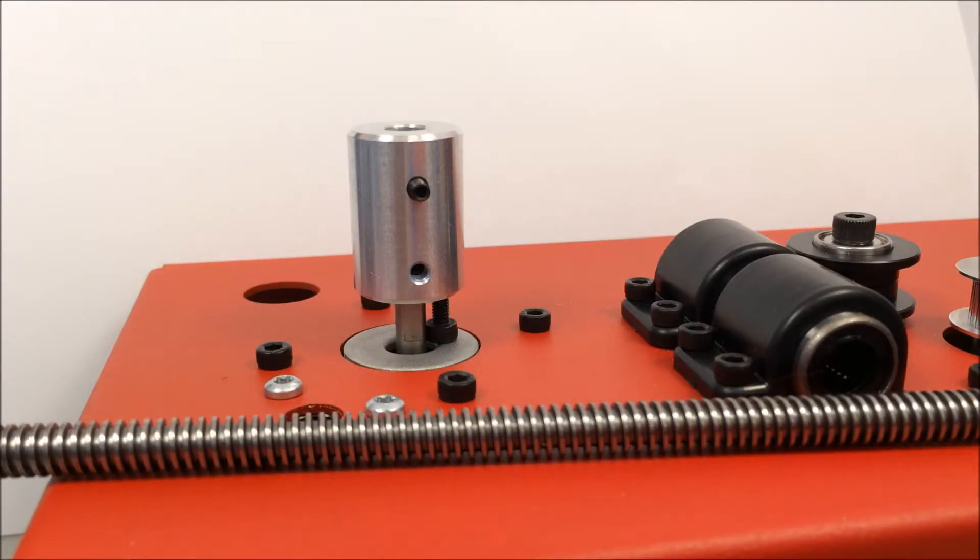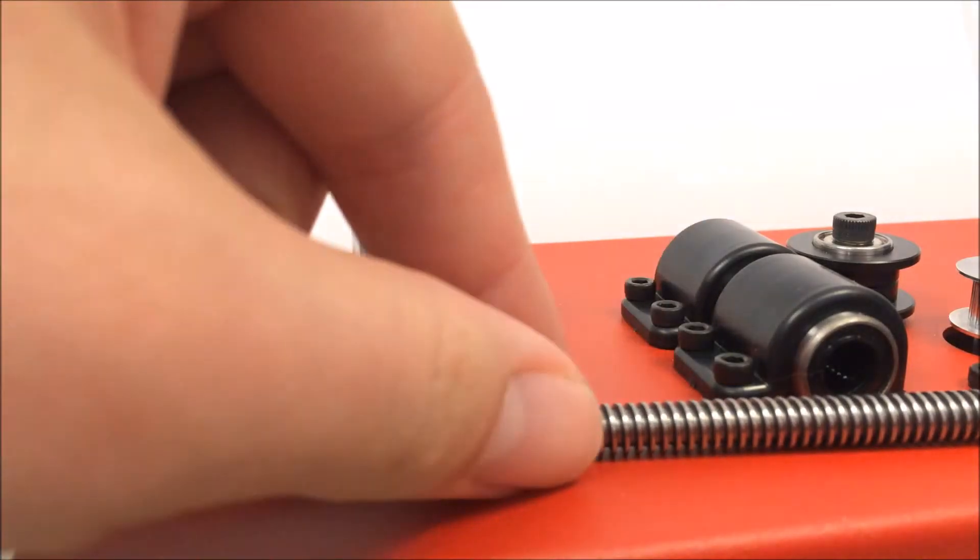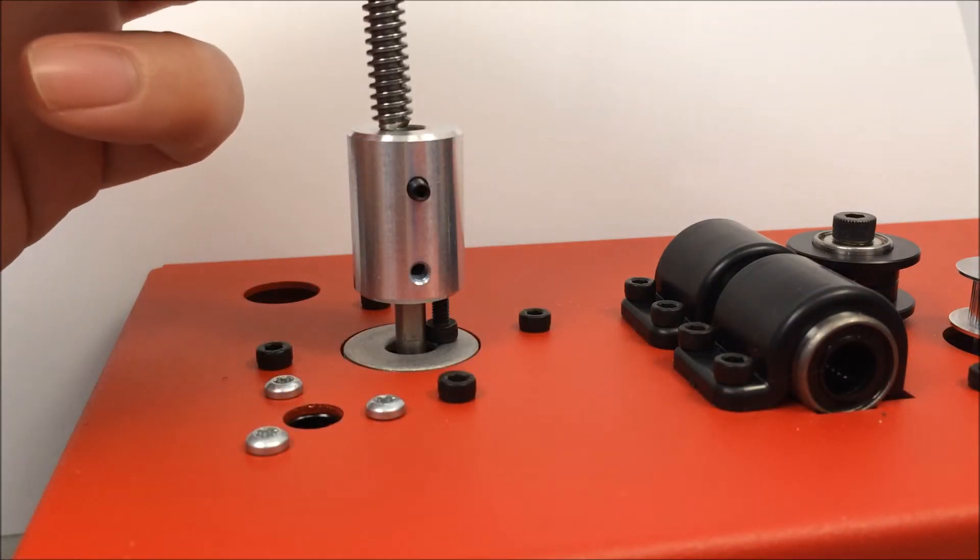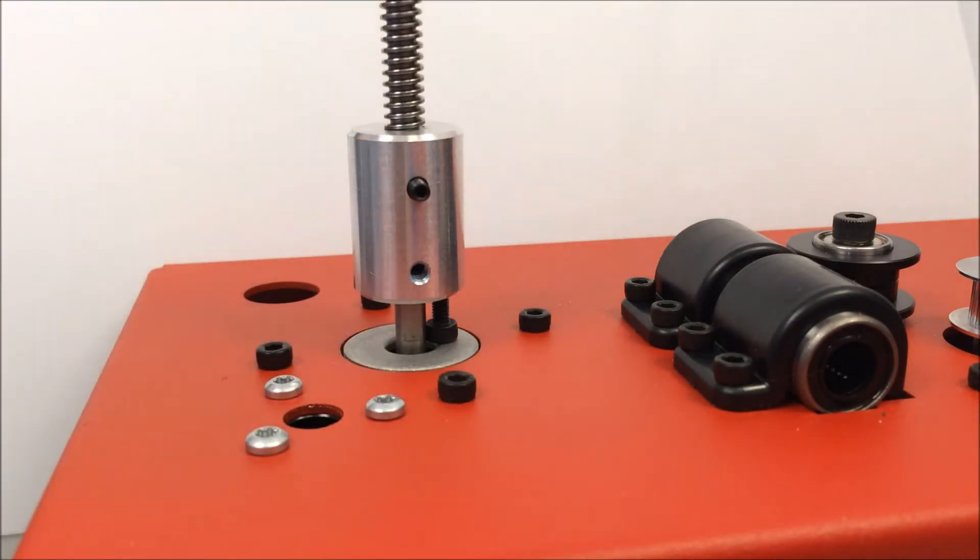Now we're ready to install the threaded rod in the top half of the coupler. I advise that you try both sides of the threaded rod because sometimes one side slides easier into the coupler. You want to make sure that as you drop it in place, you can feel it drops all the way down and makes contact with the top of the motor shaft. Once you've attached the threaded rod into the coupler, you're ready to apply thread locker to the top set screw.